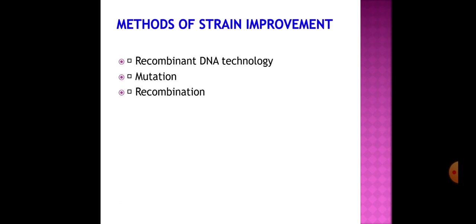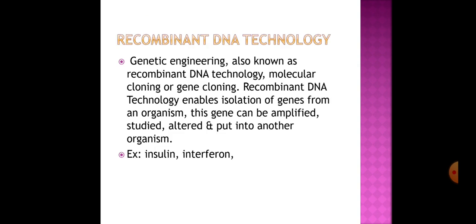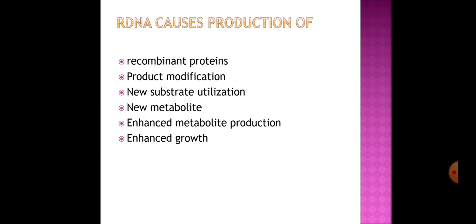The methods used for strain improvement are recombinant DNA technology, mutation, and recombination. Recombinant DNA (rDNA) technology, also known as genetic engineering, molecular cloning, or gene cloning, enables isolation of genes from an organism — the gene can be amplified, studied, altered, and put into another organism — enabling production of products like insulin, interferons, growth hormones, enzymes, and proteinases. rDNA technology also causes production of recombinant proteins, helps in protein modification, enables utilization of new substrates, production of new metabolites of interest, and enhancement of metabolite production and microbial growth.